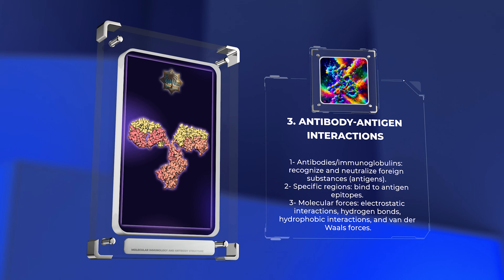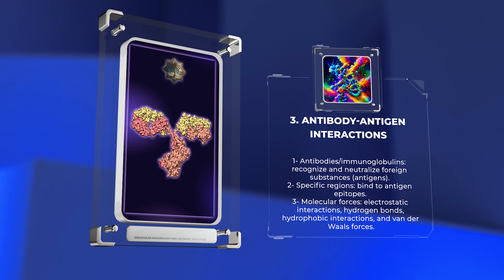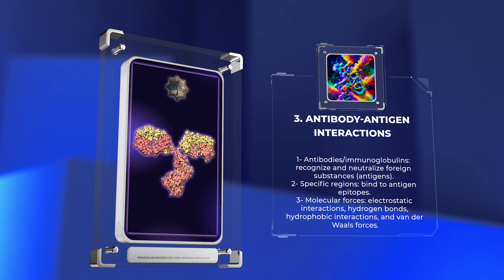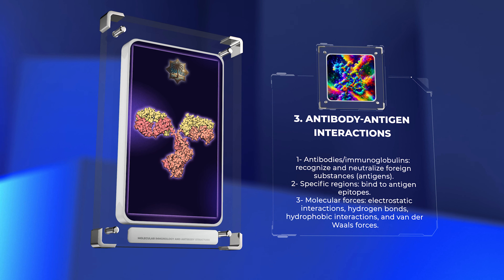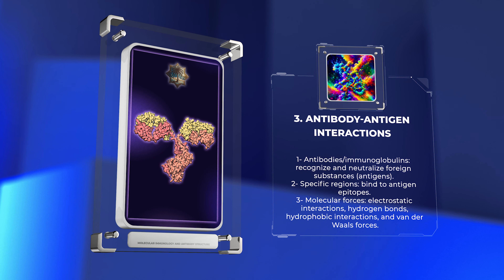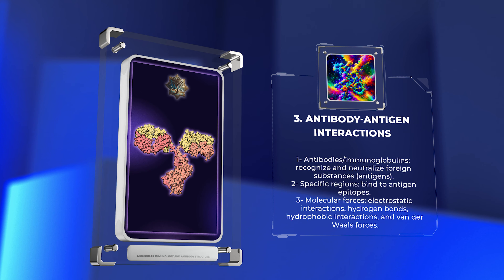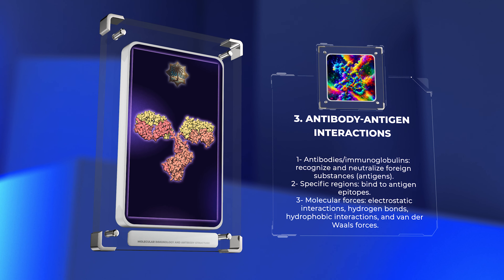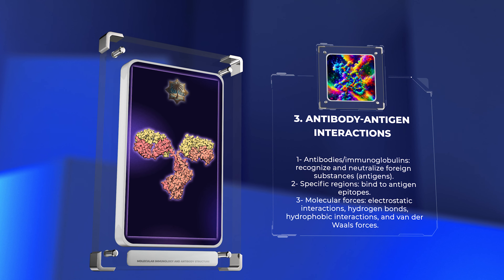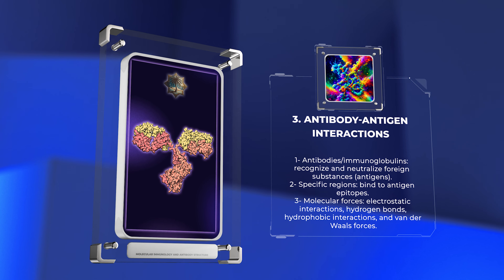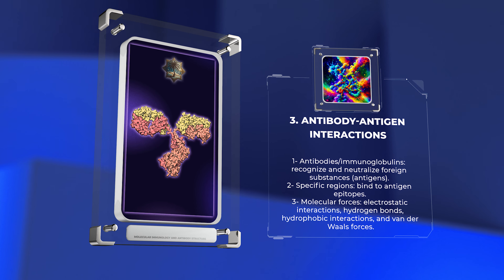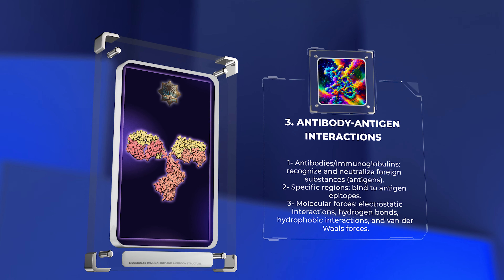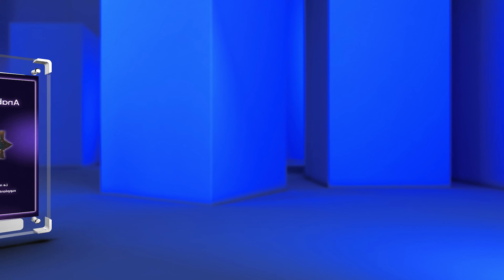Antibodies, or immunoglobulins, recognize and neutralize foreign substances called antigens. They have specific regions that bind to antigen epitopes. The interaction relies on molecular forces such as electrostatic interactions, hydrogen bonds, hydrophobic interactions, and van der Waals forces. The strength and specificity of this binding is crucial for effective immune responses.